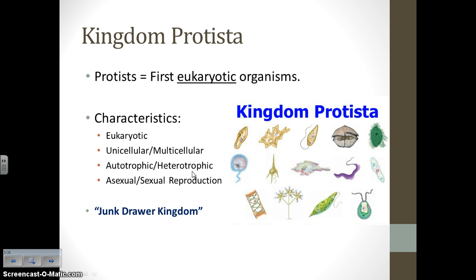Major characteristics of protists are that they are eukaryotic, but then you have a little bit of everything else. You have unicellular protists and multicellular protists, autotrophic protists and heterotrophic protists, protists that reproduce asexually and protists that reproduce sexually. That's why the nickname for this kingdom is the 'junk drawer kingdom' — just like your junk drawer at home, this kingdom has a little bit of everything that doesn't really fit anywhere else.